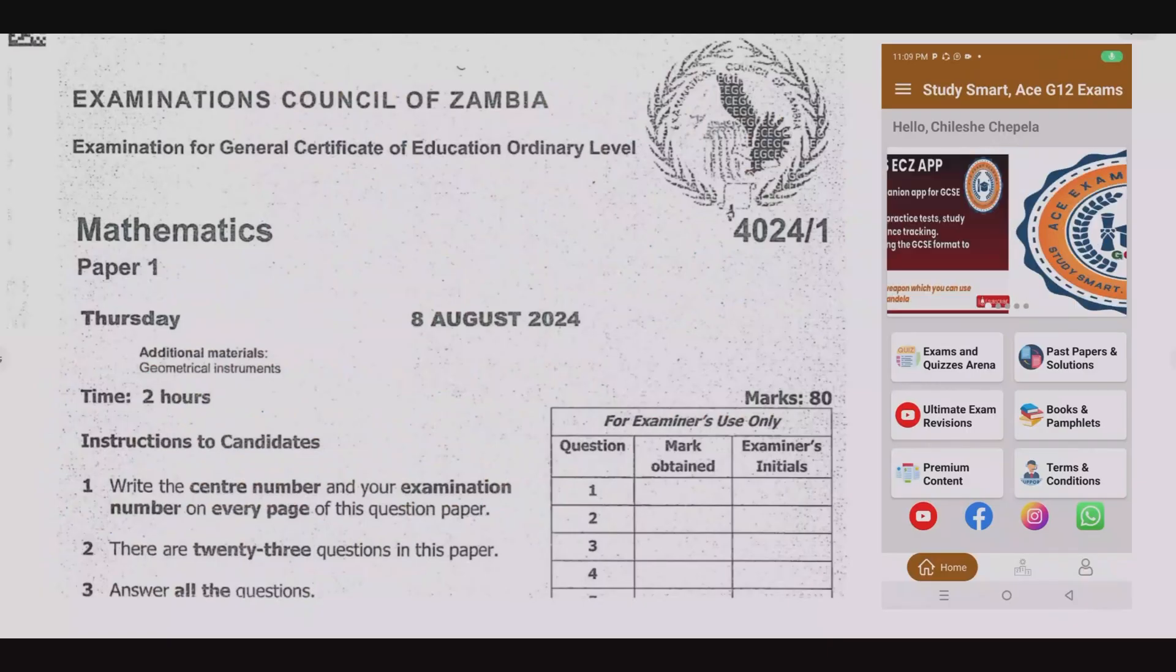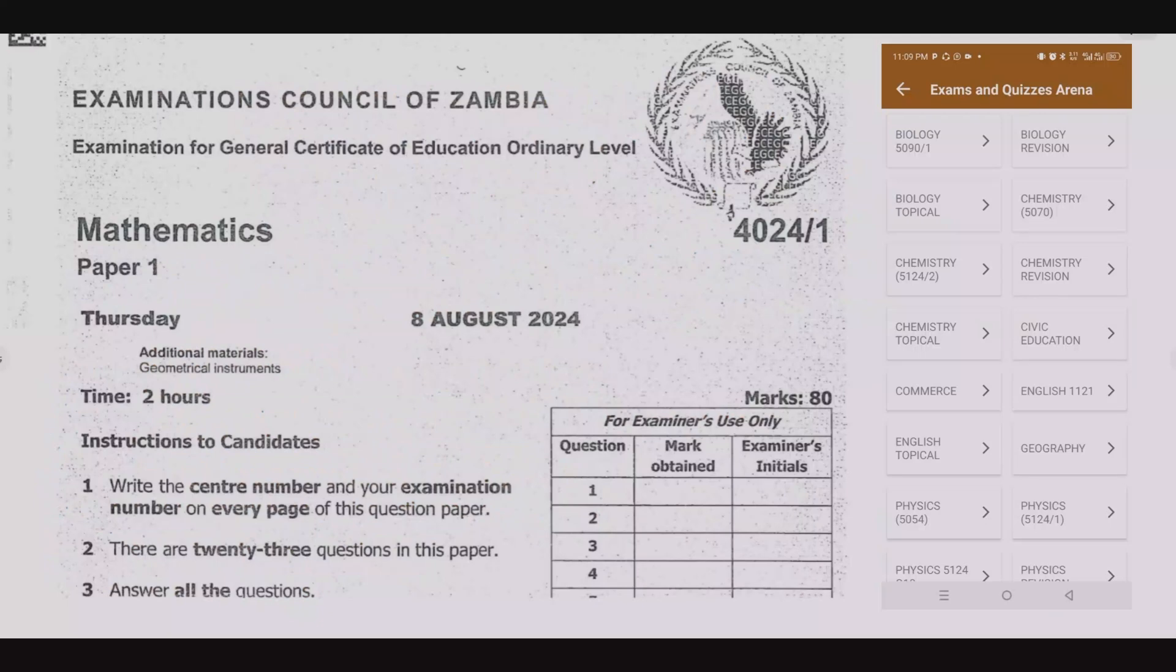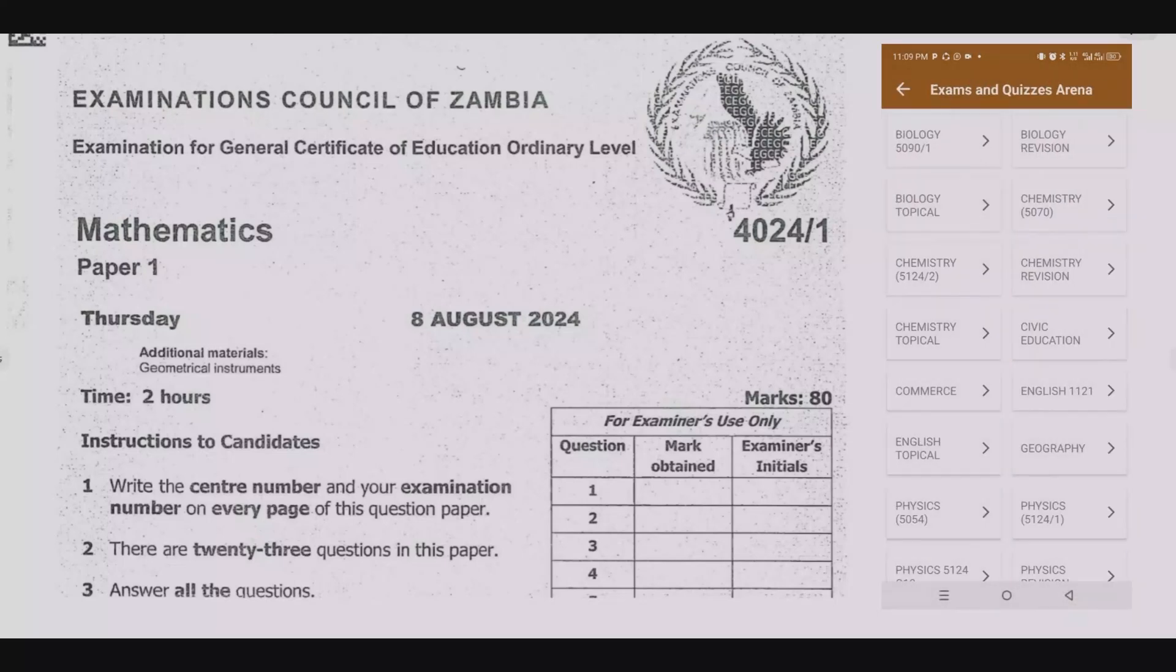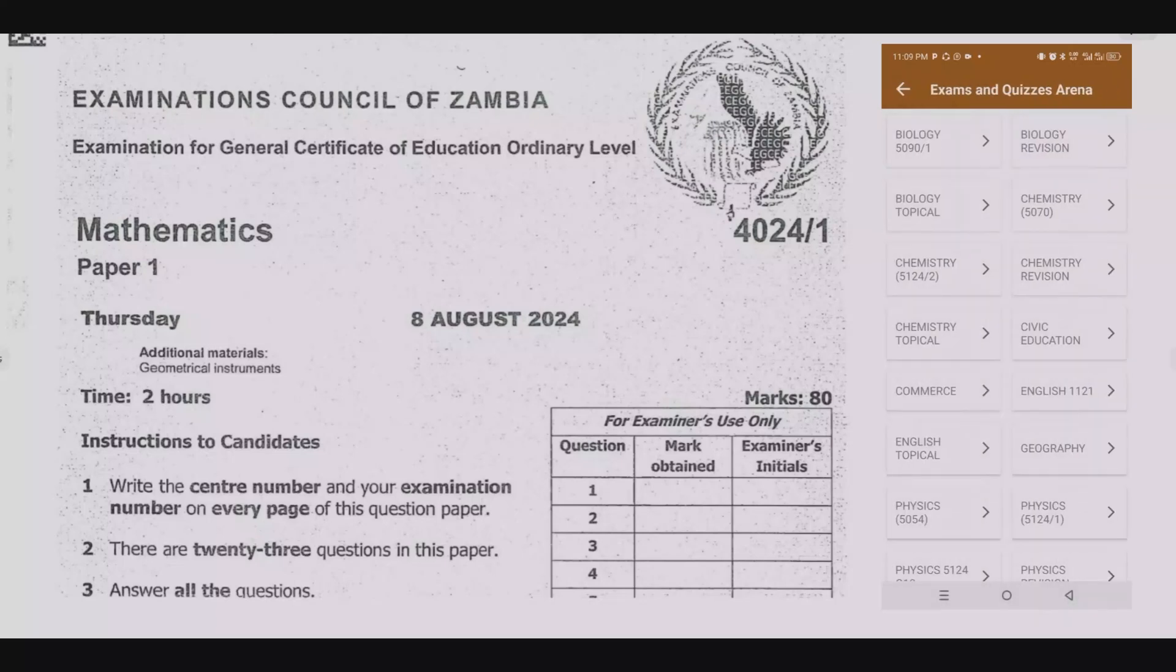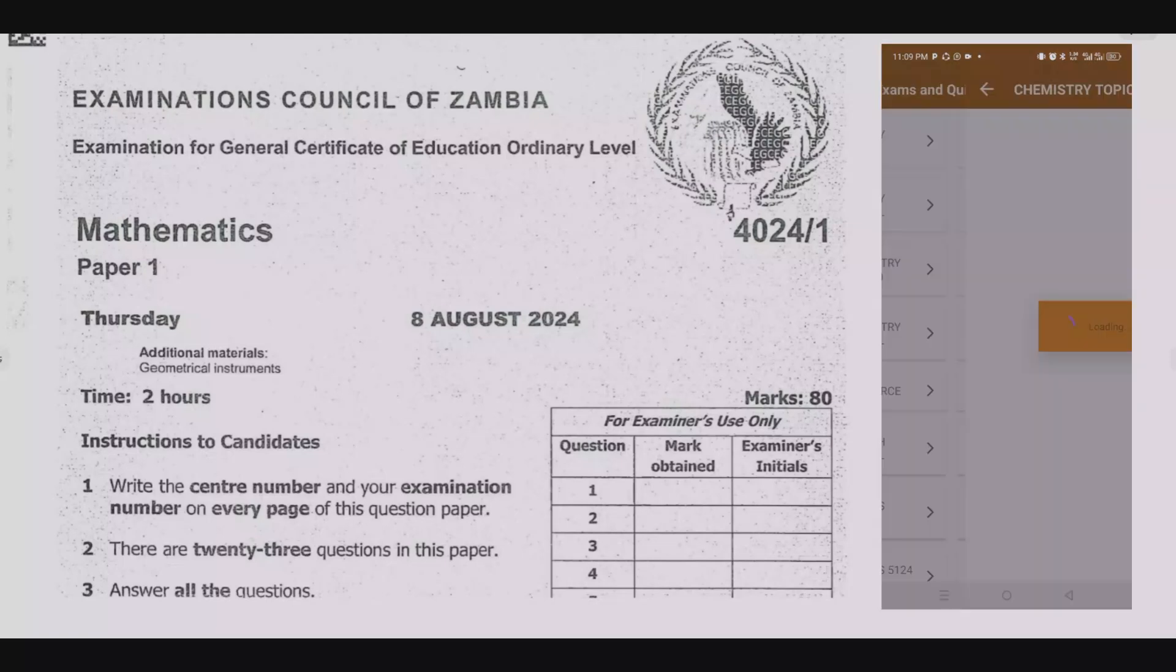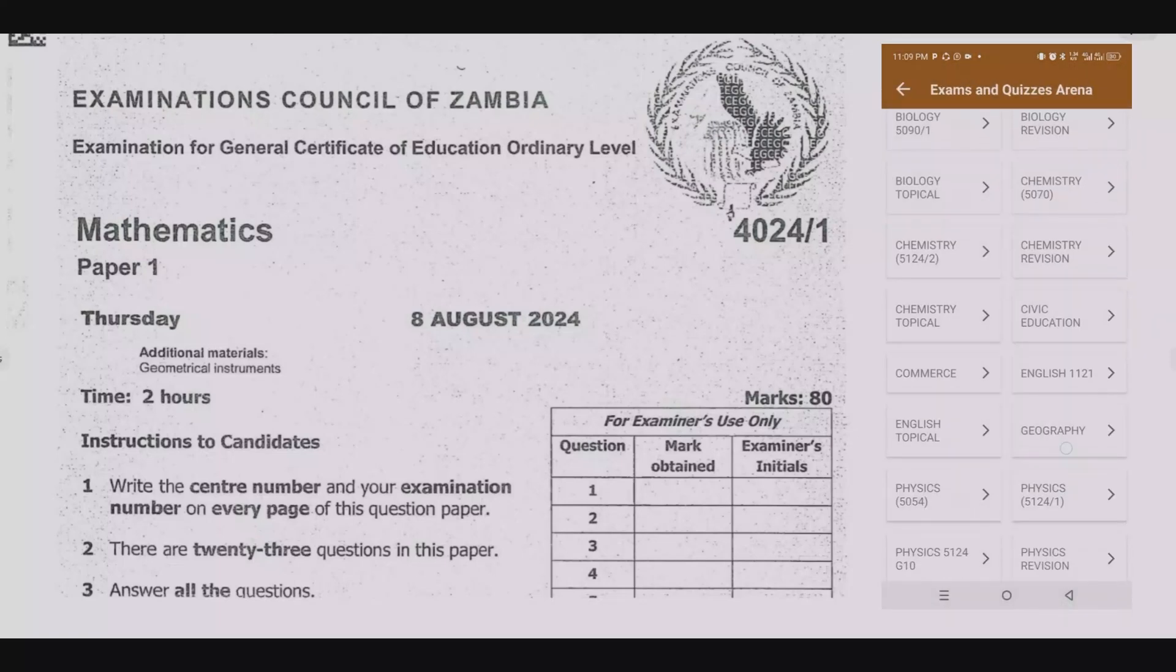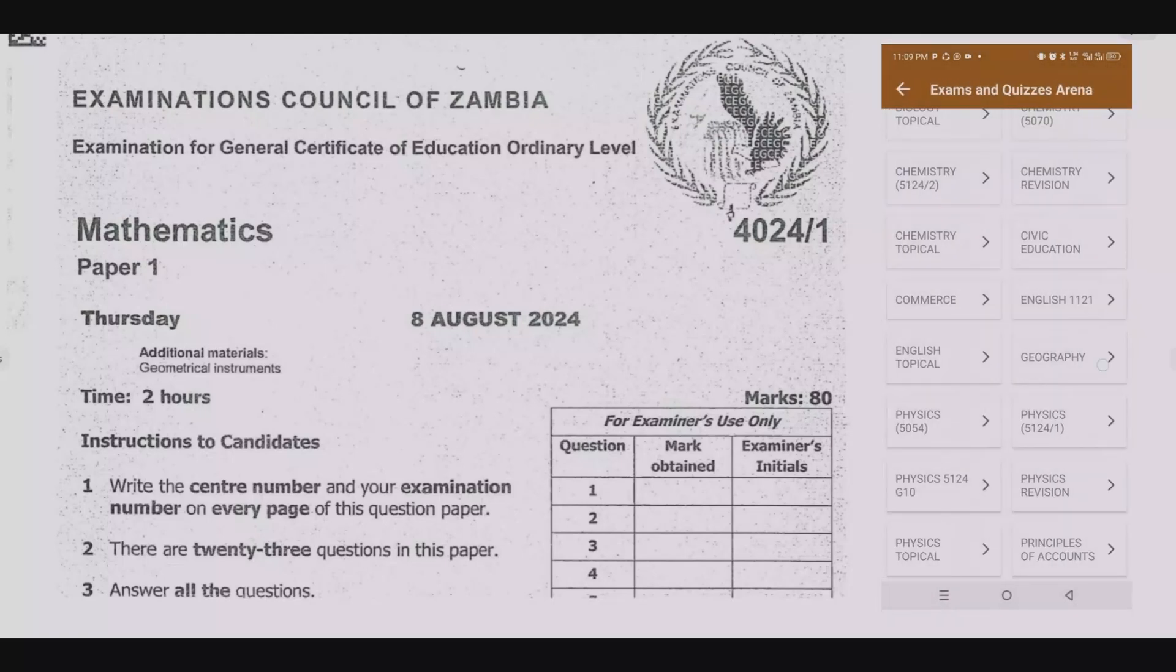Welcome viewers to another episode in a series in which we continue looking at the August 2024 mathematics paper. If you haven't seen the other episodes, please check out our YouTube channel or download the companion app on the right side of your screen. In this app, you're going to find helpful materials—quizzes based on topical exam past papers, and over 10,000 questions with free solutions, instant solutions, and detailed explanations.